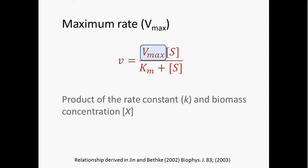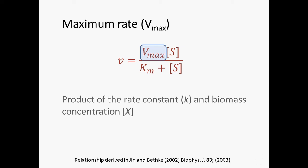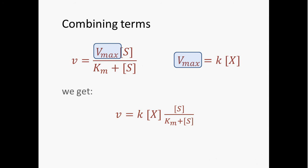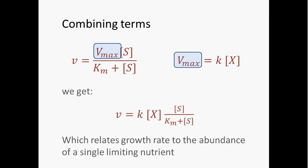Vmax can be expressed as the product of a rate constant and biomass concentration. You can think of the rate constant as a kinetic rate constant — we use rate constants to quantitatively express the rate of reactions. Biomass concentration is essentially the number of cells present. If we plug that expanded form of Vmax into our equation, we get a form of the Monod equation that relates growth rate to the abundance of a single limiting nutrient.